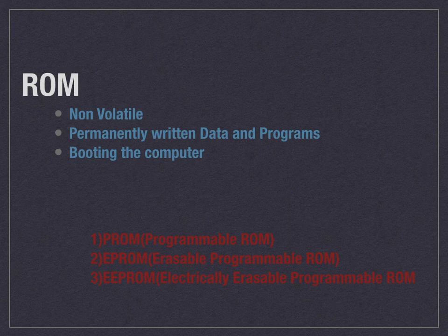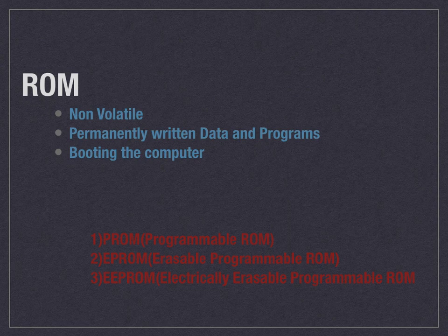The third type of ROM is EEPROM — electrically erasable programmable ROM. Previously we saw that EPROM erases data by using ultraviolet light, but in EEPROM you can electrically remove the data stored in the ROM, which also makes it possible to reprogram the memory.